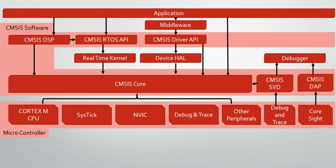CMSIS SVD — the SVD stands for System View Description for Peripherals. This can be used to gather information from other peripherals and feed that information into a software debugger. CMSIS DAP, the Debug Access Port, is more standardized firmware that is intended for use on evaluation boards. You won't see this software used on final products.